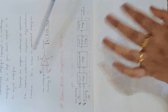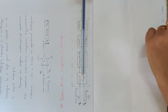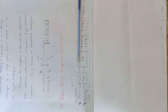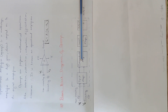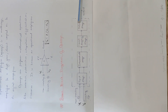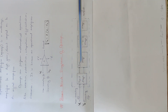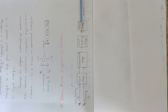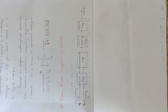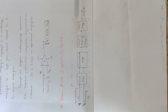Now we have four stages: the Input Stage, Intermediate Stage, Level Shifting Stage, and Output Stage. These form the complete internal structure of the Op Amp.